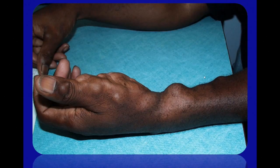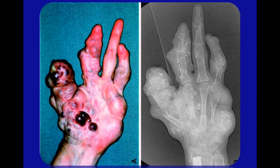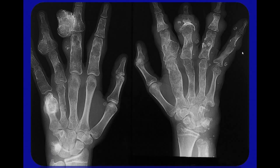This is Maffucci. You can see these nodular deformities of their entire hands. You can also see some spindle cell hemangiomas in here, as well as these large multinodular enchondromas with calcifications on the x-ray. And here's another example.